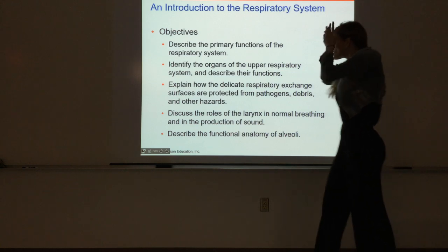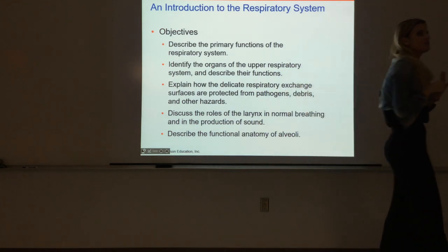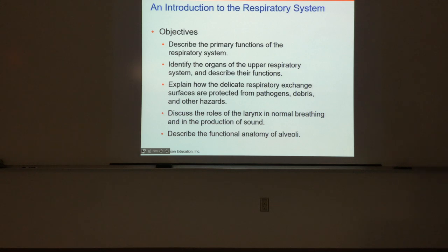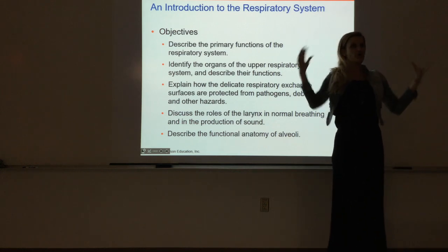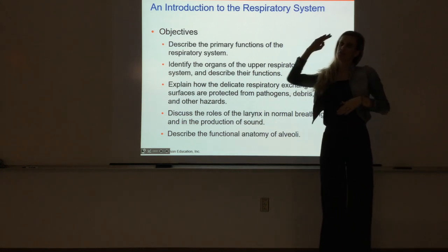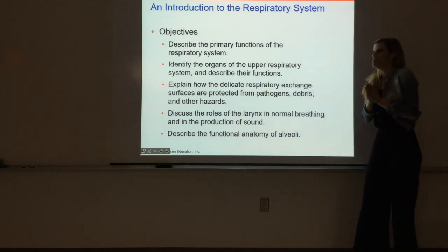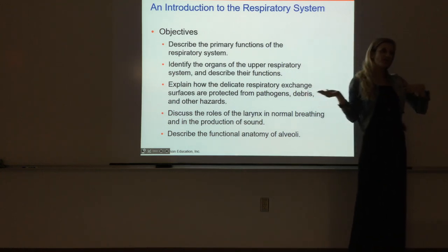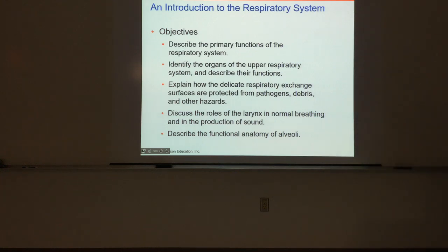By the end of the chapter, you should be able to describe the primary functions of the respiratory system and identify the organs in it. You should be able to split those organs into broad classes - we have an upper respiratory tract and a lower respiratory tract, as well as a conducting portion and an actual respiratory portion.